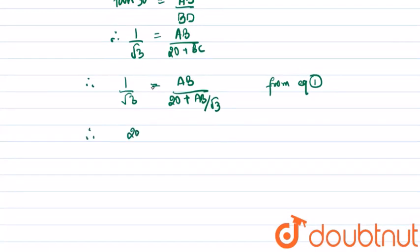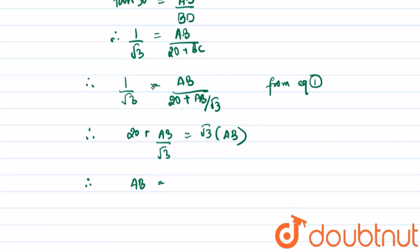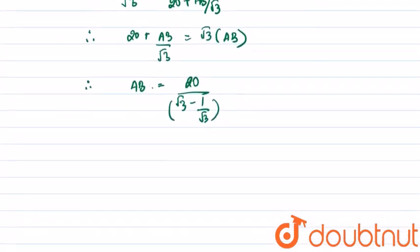Therefore, 20 plus AB upon root 3 equals root 3 times AB. Therefore, the height AB equals 20 upon (root 3 minus 1 upon root 3) as a whole. Therefore, the value of AB equals 17.32 meters.